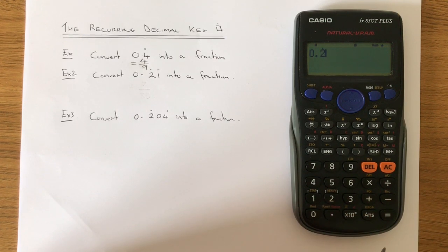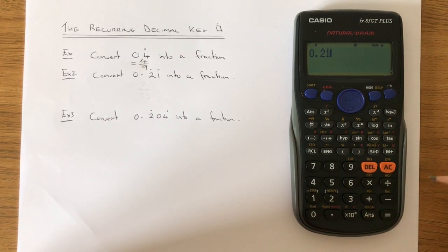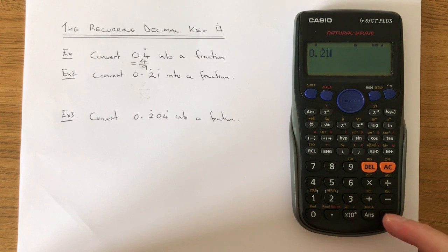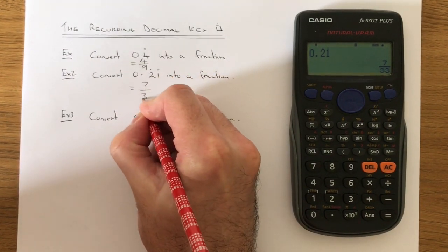Type in the 2 in that first box, and then we just need to type the 1 straight after, and you can see that the dot is on the 1. Hit the equals and that will give an answer of 7 over 33.